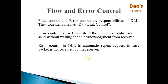Another job of the data link layer is to do flow and error control. Flow and error control are together called data link control. Flow control is used to restrict the amount of data a sender can send without waiting for an acknowledgement from the receiver. The sender is sending data and the receiver is receiving data, but both are working at different speeds.